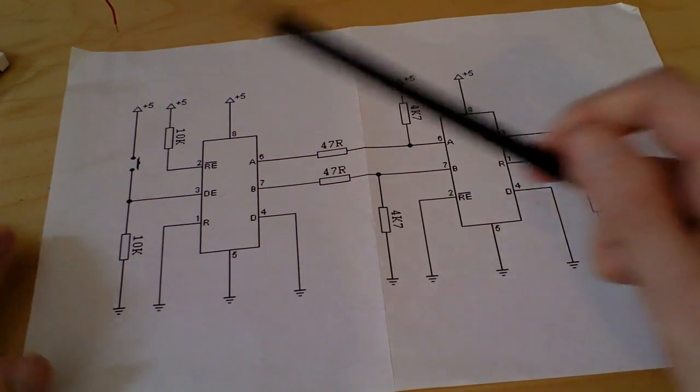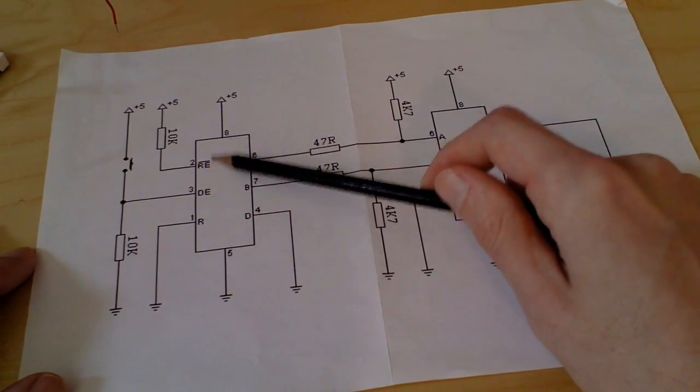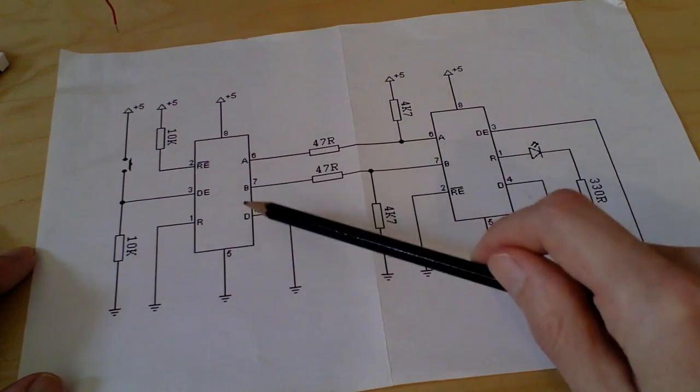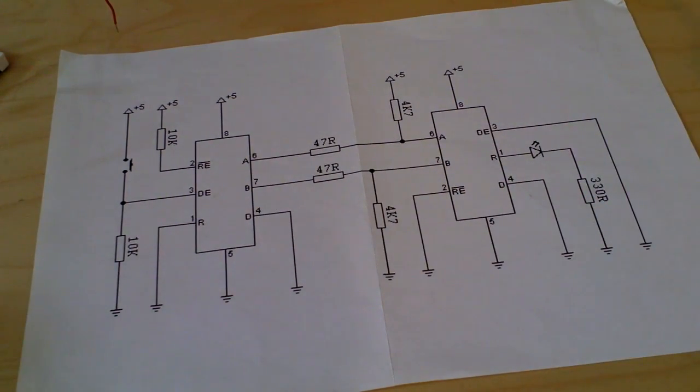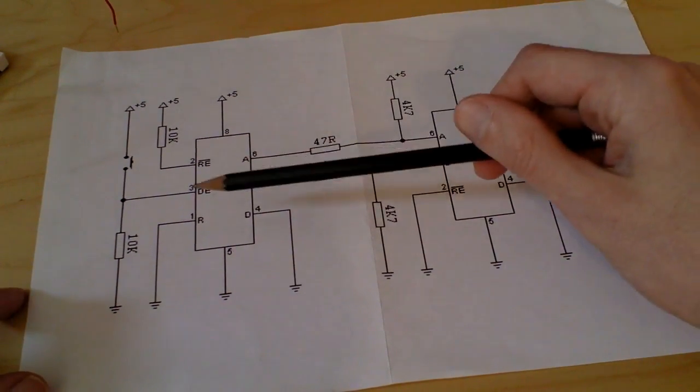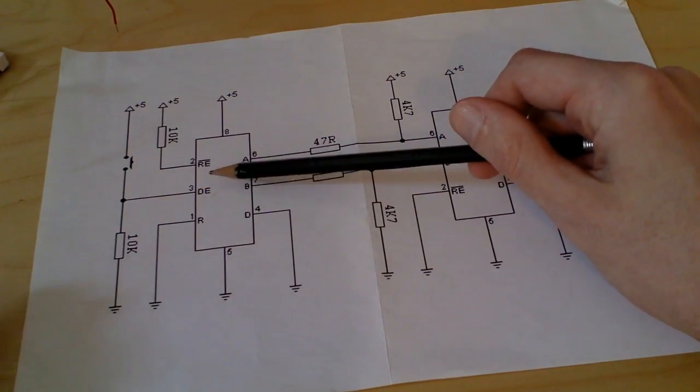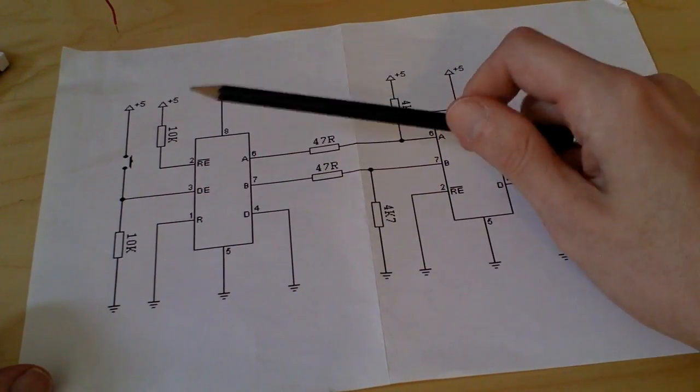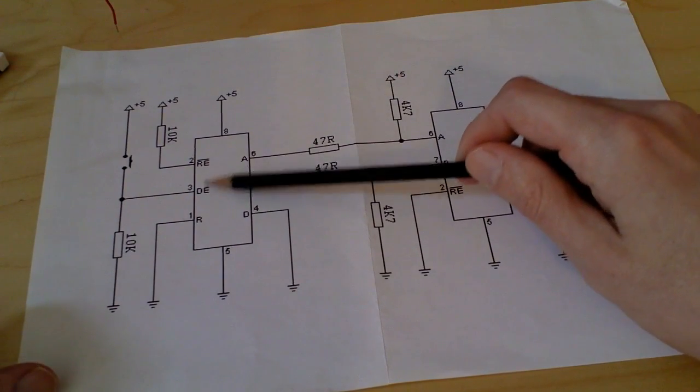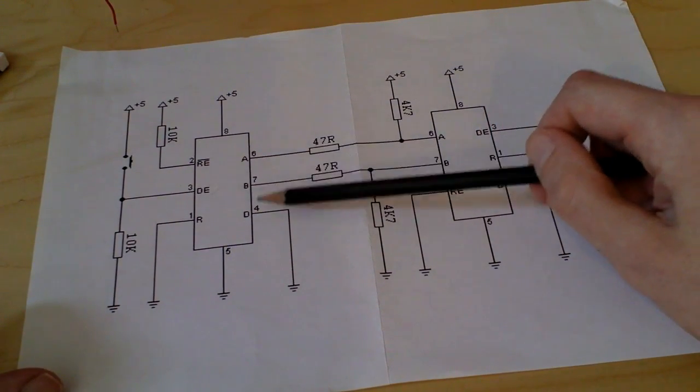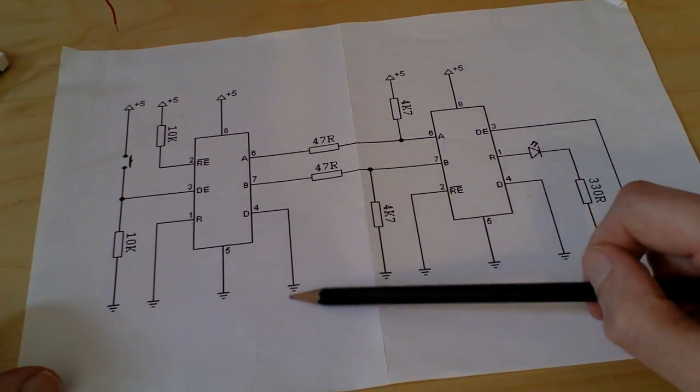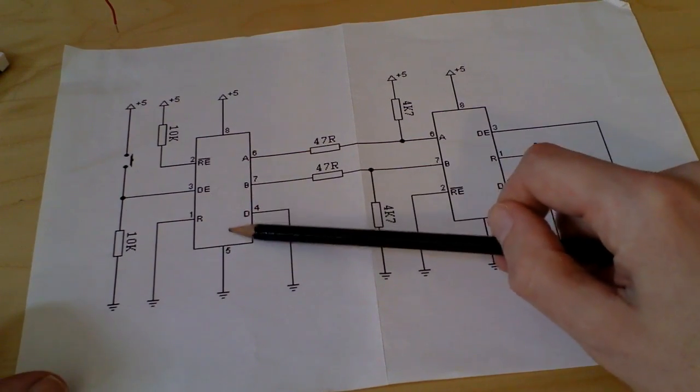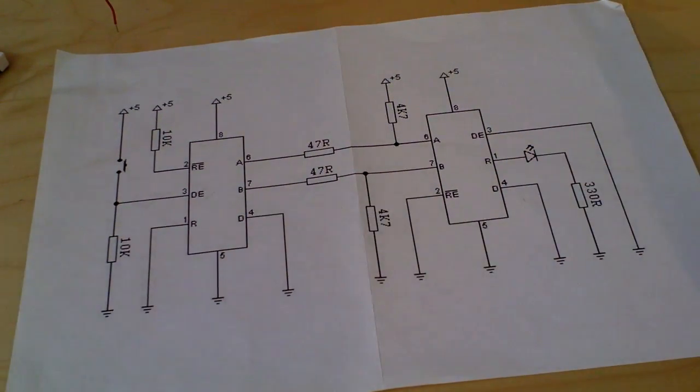So that effectively means there are three lines. One to control these two and one for each of these. However, by toggling the drive enable, it's possible to cut it down to two pins because we've eliminated the need for this driver here.